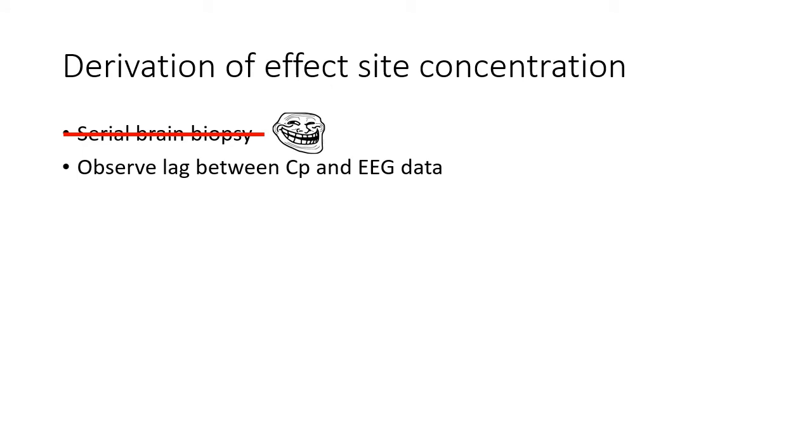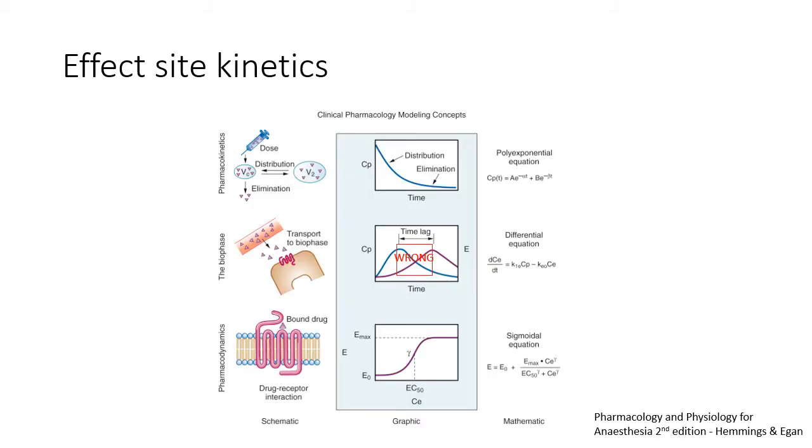Instead, we model the lag between changes in plasma concentration and changes in the EEG data using KE0. For the Schneider model, the KE0 was derived at the time the model was first developed, and so it is best suited to effect targeting mode. On the other hand, the Marsh model was developed with plasma targeting in mind, and the KE0 was introduced sometime later.